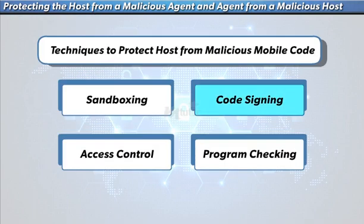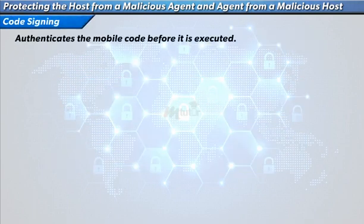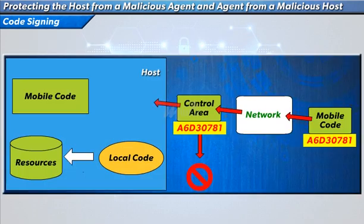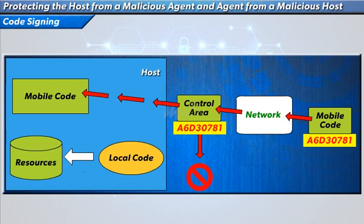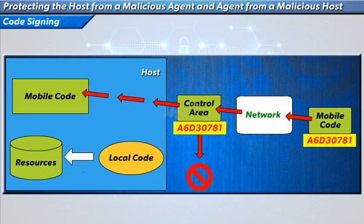The next technique is code signing. This technique authenticates the mobile code before it is executed. The producer of the code is required to sign it digitally with a one-way hashing method, and the consumer of the code verifies the signature before using it. This enables the platform to verify that the code has not been changed since it was signed by the producer.